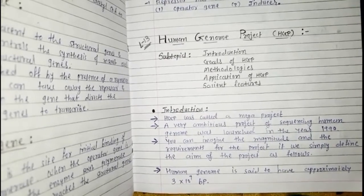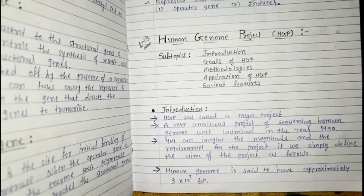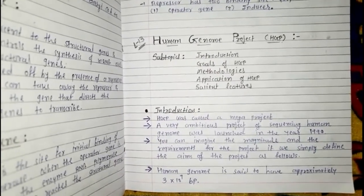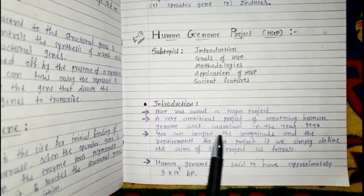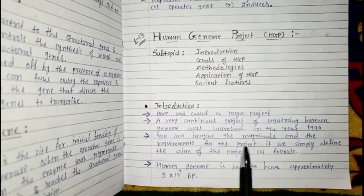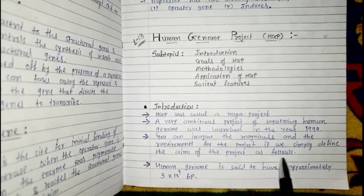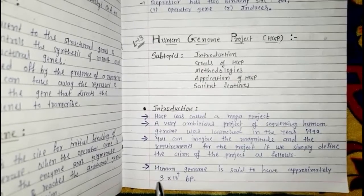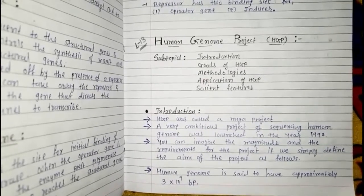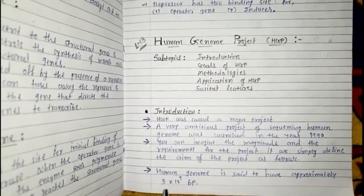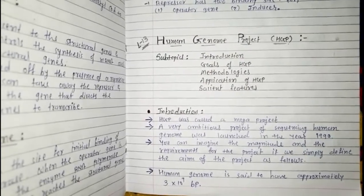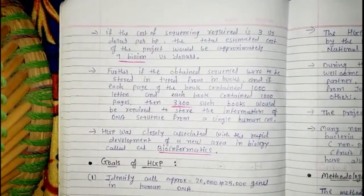That is why it is called a mega project — it is not a small project. It involves a huge amount of people, large funding, and very large data. To understand the magnitude, the human genome is said to have approximately 3 × 10⁹ base pairs. So you can imagine how many nucleotides are present in the complete DNA sequence.